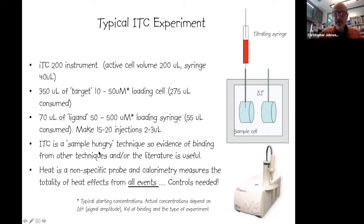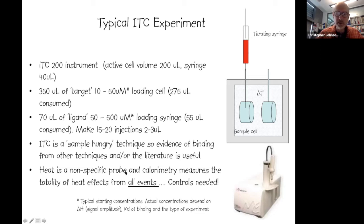ITC is definitely a sample-hungry technique, so it's useful to have evidence of binding from other techniques or the literature before embarking on ITC measurements. Since heat is a non-specific probe and calorimetry measures the totality of heat effects — including changes in water and protonation — we often need controls, which means consuming more material.